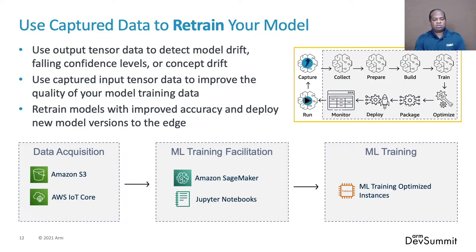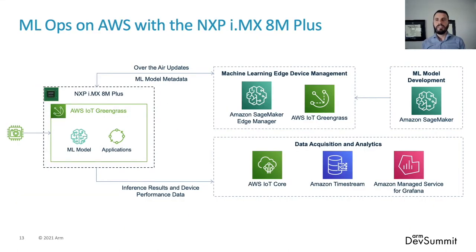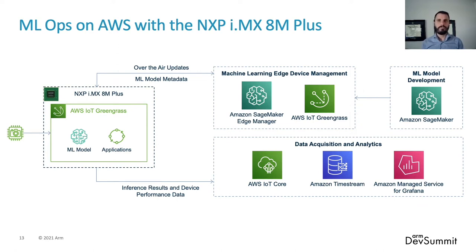Let me hand over to David who will demonstrate a complete end-to-end workflow from cloud to the edge device. Let's take a look at a diagram of a real-world use case. Starting from the right, we develop a new machine learning model on Amazon SageMaker. Using AWS IoT Greengrass, we deploy it to the edge. An application at the edge consumes a stream from an IP camera and publishes data to AWS IoT Core. Data is stored in Amazon Timestream, a fast database optimized for time series data, and a dashboard is shown in Amazon Managed Grafana service for viewing and monitoring the performance of the machine learning model. I'll also show how to use AWS IoT Greengrass to update the model over the air.